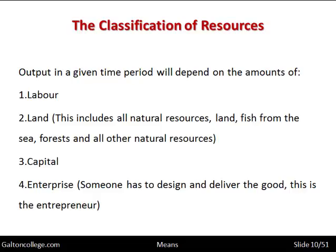Someone must think this product is a good idea, this product will sell — and if it doesn't sell, that person is responsible; if it does sell, that person will be rewarded with profits. So we have four factors of production: labour, land, capital and enterprise. The rewards to the four factors are: labour is paid a wage or salary; land gets rent; capital receives a rate of return, like the rate of interest; and enterprise receives profits.